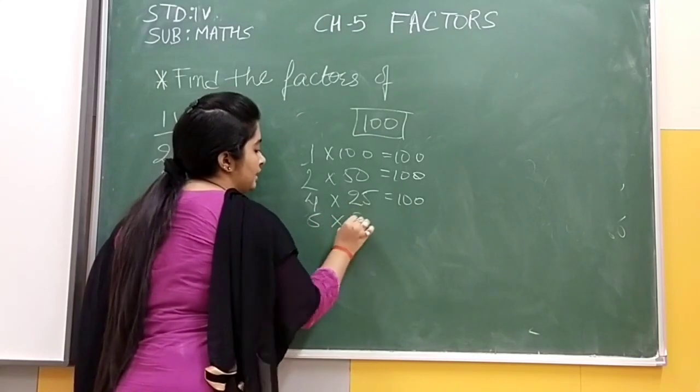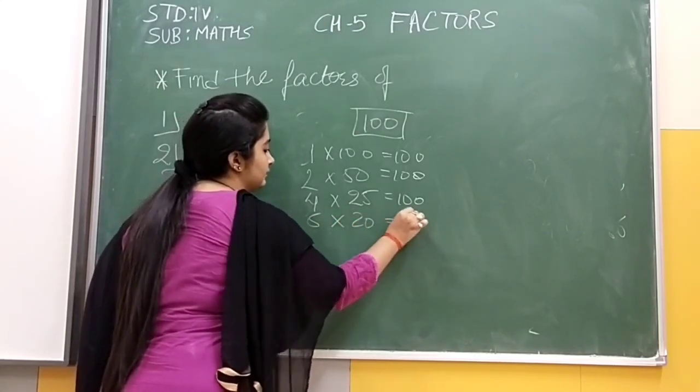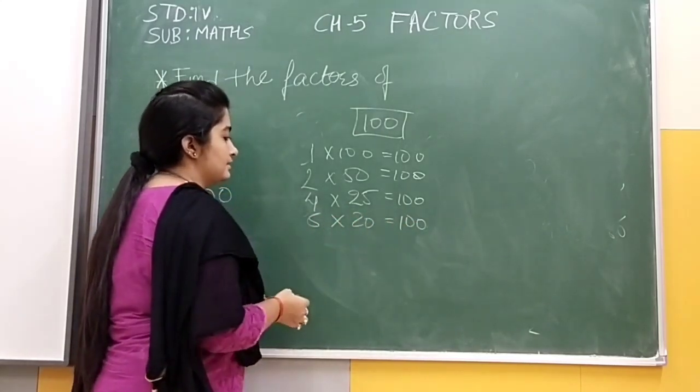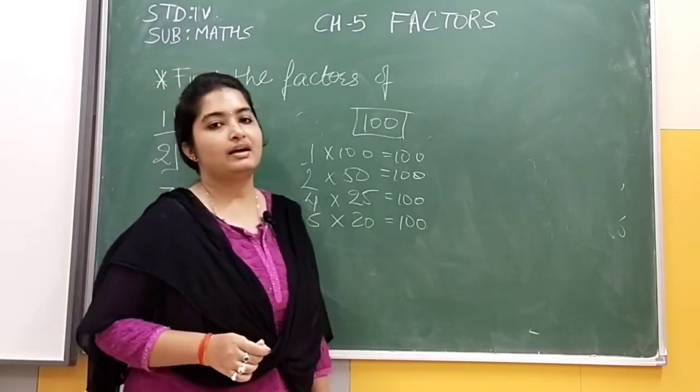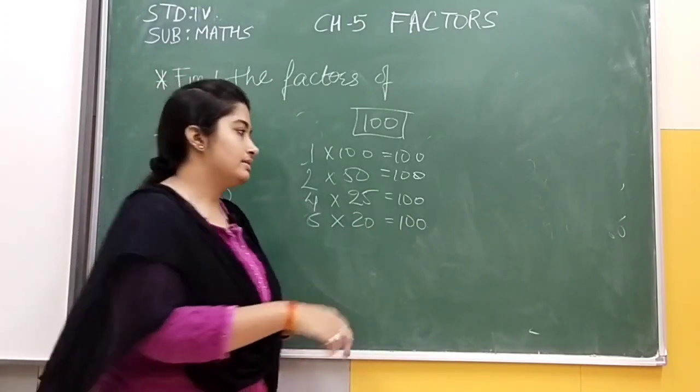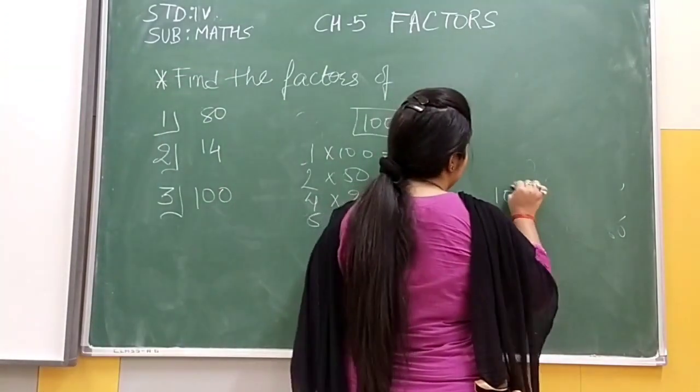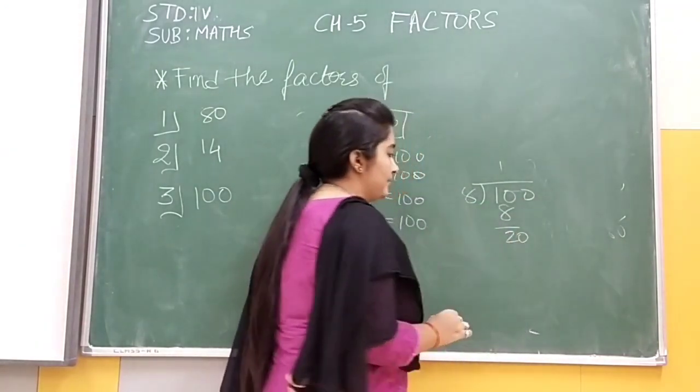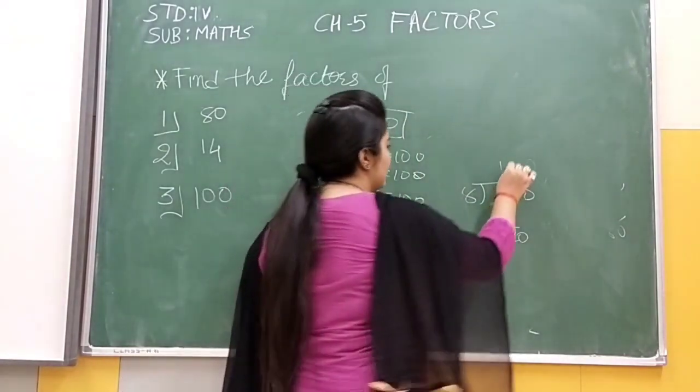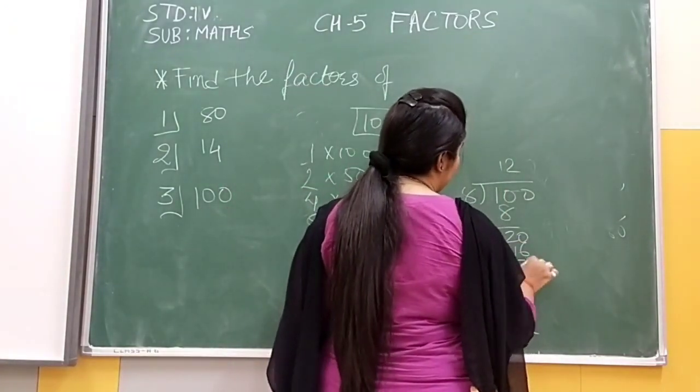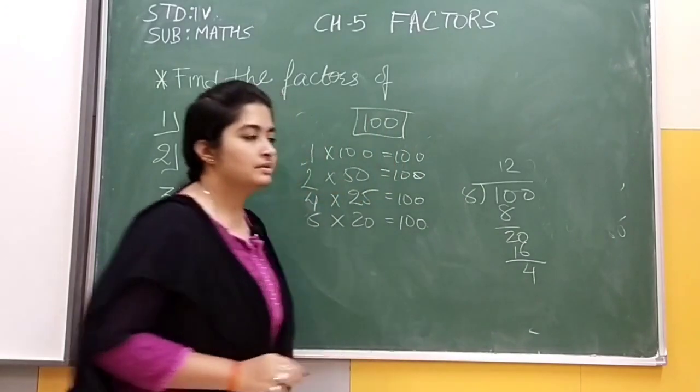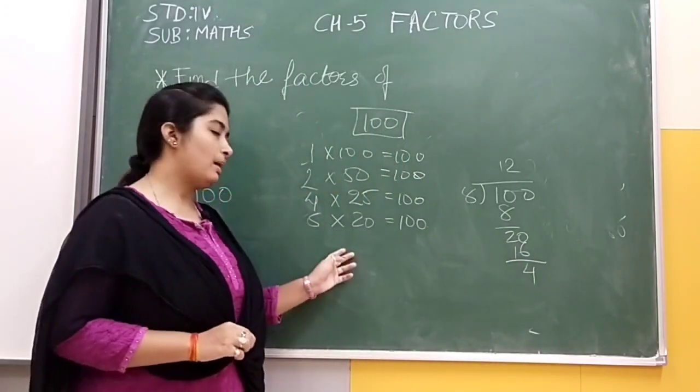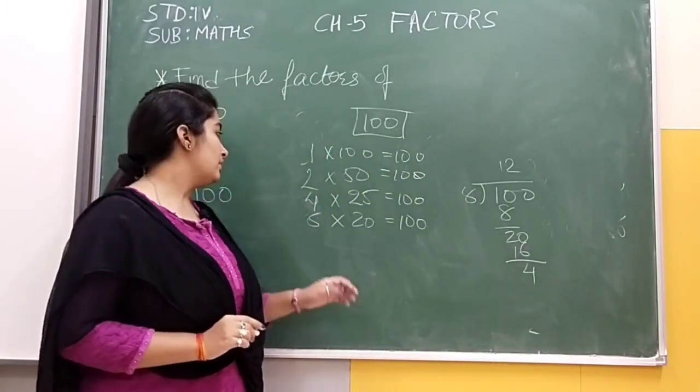3 won't come. Then 4? 4 into 25 is 100. 5 into 20 is 100. Then 6 won't come. 7 also can't come. Can 8 come? Let us check. 8 into 20 gives remainder 4. We need remainder 0, so we can't write it here.